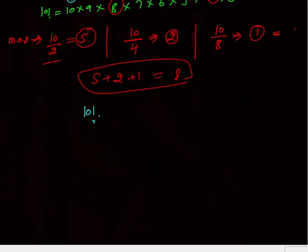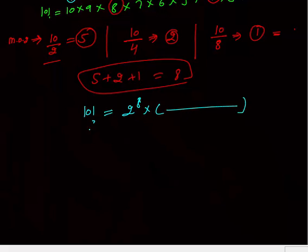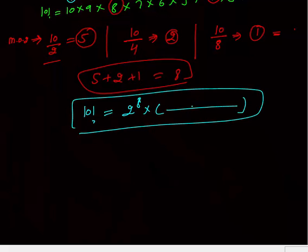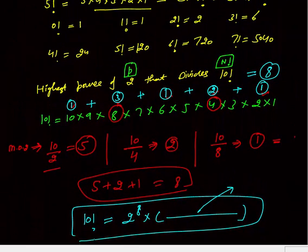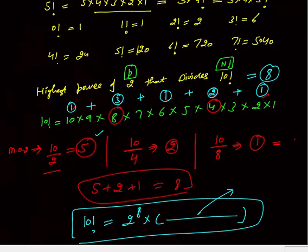You can write 10 factorial as 2 to the power 8 into something else, where that remaining part contains no 2's — we have taken all 2's out. That is the way to calculate the highest power of a prime number: take multiples of p, then p squared, then p cubed, and so on.